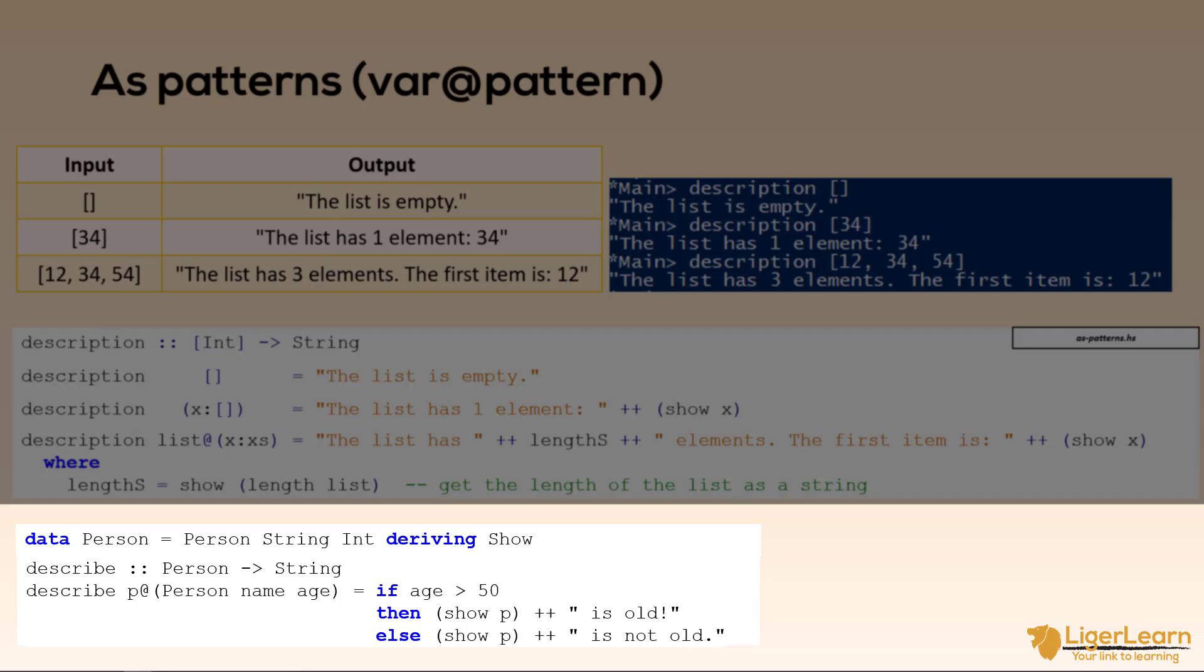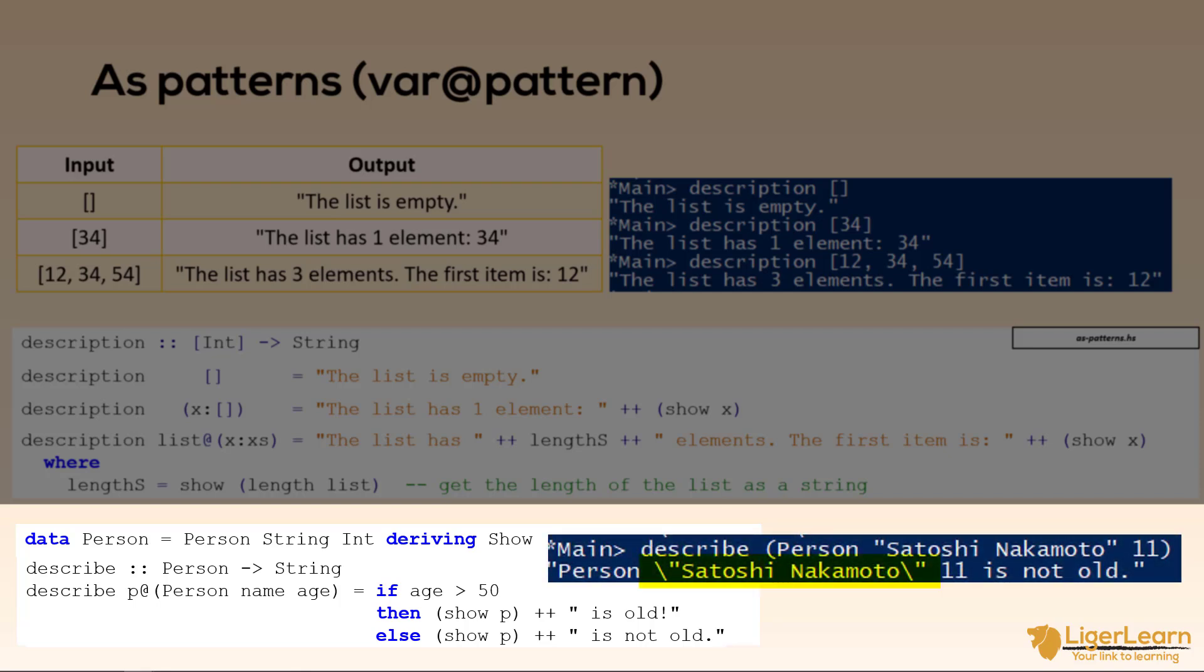Then we simply use whatever variable bindings we need in the function body to return our string and the function works as expected. Since we are displaying the name which is a string within the wider string we can see that the quotes are escaped using a backslash. This is expected.